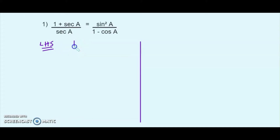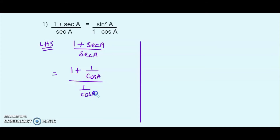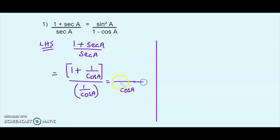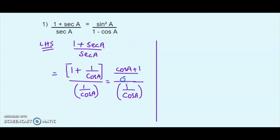Starting with the LHS: (1 + sec A) / sec A. The reciprocal of cosine is secant, so I substitute sec A = 1/cos A. This gives (1 + 1/cos A) divided by (1/cos A). Taking the LCM in the numerator gives (cos A + 1) / cos A, divided by (1/cos A). Since both the top and bottom fractions share cos A as denominator, the cos A cancels off, leaving cos A + 1.